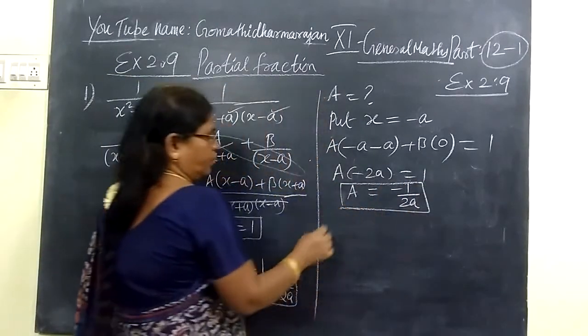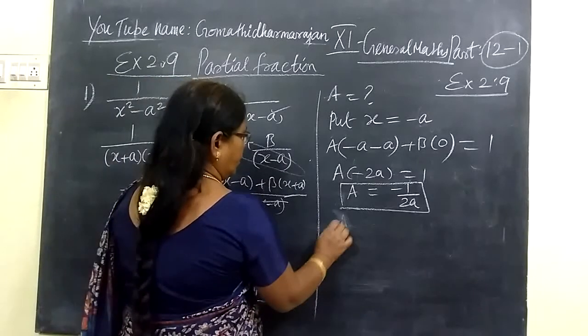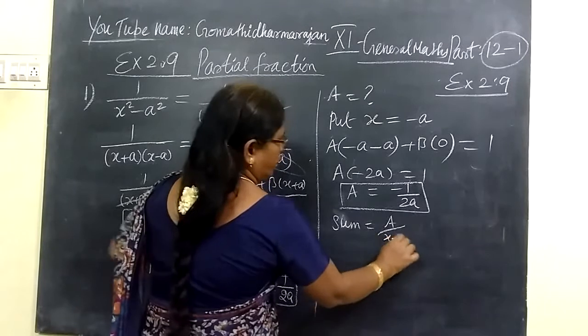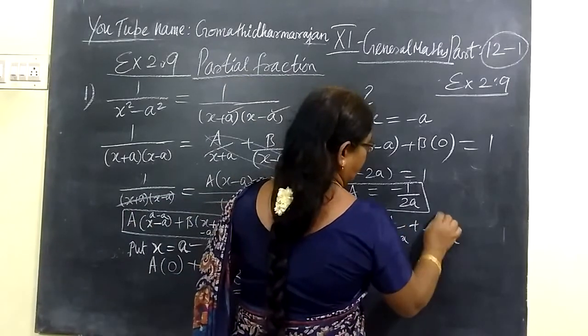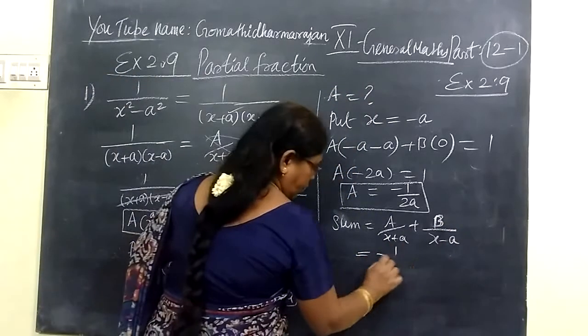This is equal to 2A. In this, this is x minus A. So sum equal to: A by (x plus a), then B is 1 by 2A. So what is the value?